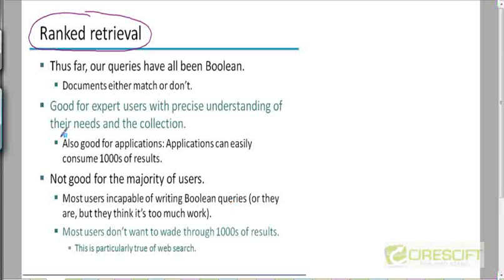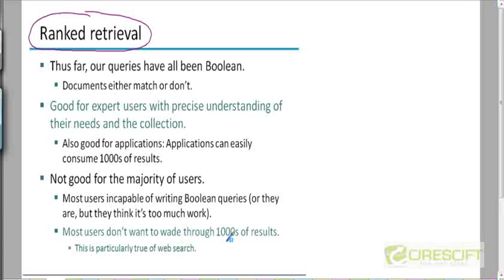The other thing with Boolean retrieval is that it may be good for applications which consume the results of a search index. In other words, if the results of a query are not going to be consumed by a human but by an application, then this kind of model may work because applications can automatically parse thousands and thousands of results. But if you are going to return such results to a human user, the problem is that if you have thousands of results, users can't be expected to wade through so many. That's particularly true of web search, where users don't have the patience to look beyond the first 10 or 20 documents.